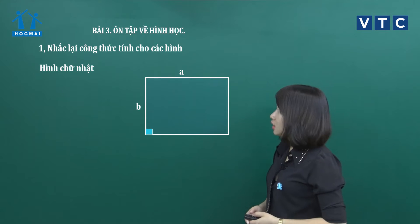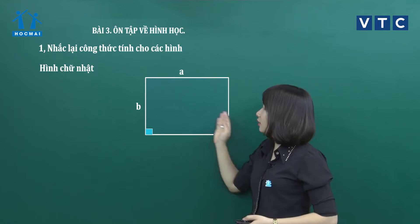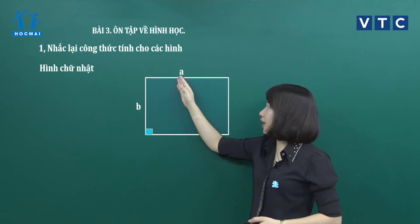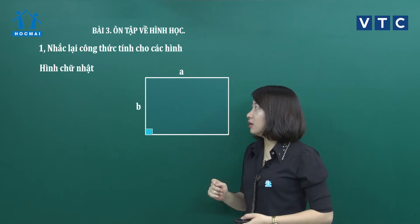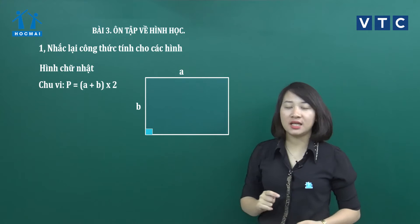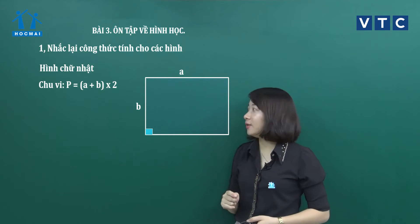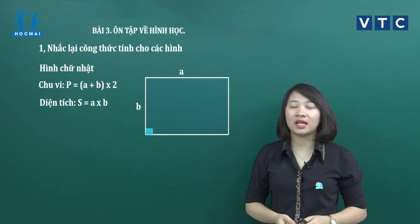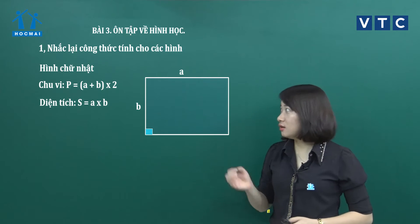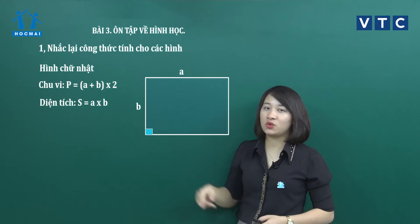Trong hình chữ nhật thì có 2 cạnh bằng nhau là chiều rộng, 2 cạnh còn lại bằng nhau là chiều dài. Muốn tính chu vi chúng ta sẽ lấy chiều dài cộng chiều rộng tất cả nhân với 2. Hoặc muốn tính diện tích chúng ta sẽ lấy chiều dài nhân với chiều rộng. Chiều dài và chiều rộng phải để ở cùng đơn vị đo.